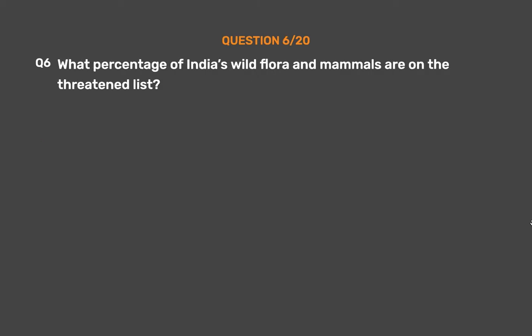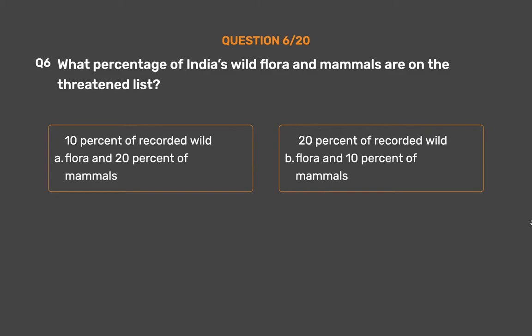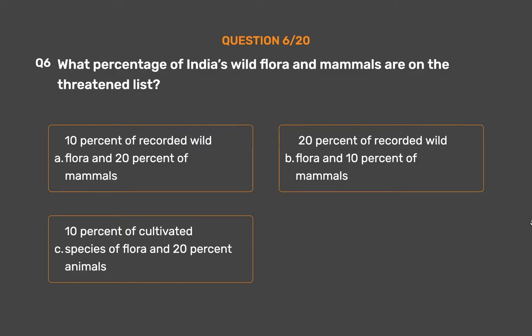Question number 6. What percentage of India's wild flora and mammals are on the threatened list? Option A: 10% of recorded wild flora and 20% of mammals. Option B: 20% of recorded wild flora and 10% of mammals. Option C: 10% of cultivated species of flora and 20% of animals. Option D: None of these.